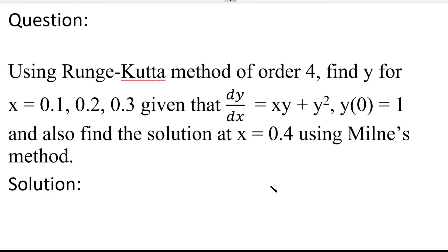Hi students. In this video, we will use Milne's method to solve one problem. The question is: using the Runge-Kutta method of fourth order, find y for x equal to 0.1, 0.2, 0.3, given that dy/dx equals x·y plus y squared, and y(0) equal to 1. Also find the solution at x equal to 0.4 using Milne's method.